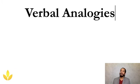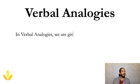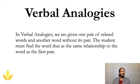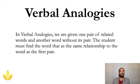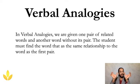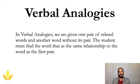It's verbal analogies. In verbal analogies, we are given one pair of related words and another word without its pair. The student must find the word that has the same relationship as the first pair. So you are analyzing — you have two words that are related to each other, and you will have another two words where one word is usually missing. You are supposed to find that missing word. This is also another test of your language skill.